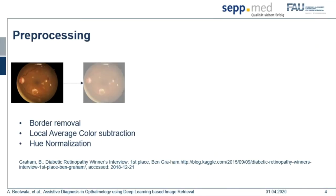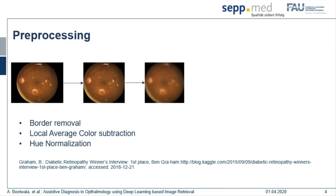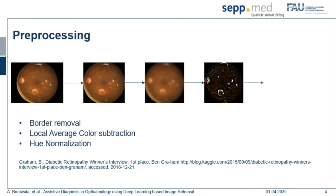Our pre-processing step includes border removal, local average color subtraction, and hue normalization. We do this mainly to prevent the network from ranking similarity based on background color.